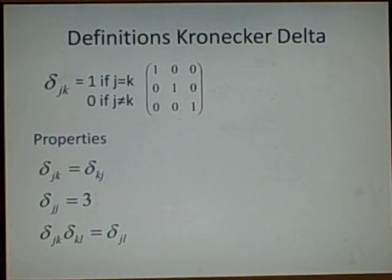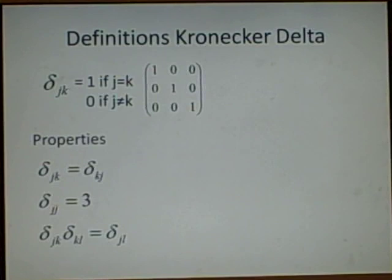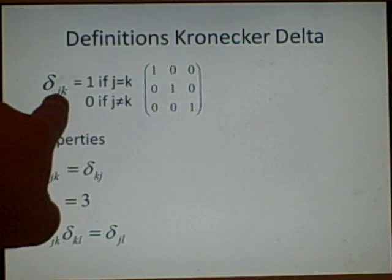This is the Kronecker Delta, and as you can see, it's the delta symbol with a lowercase jk. This is equal to 1 if j equals k, and 0 if j does not equal k.